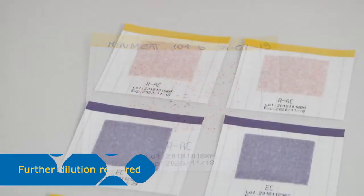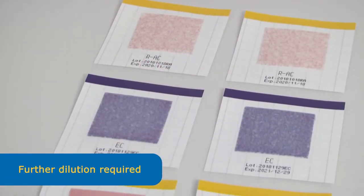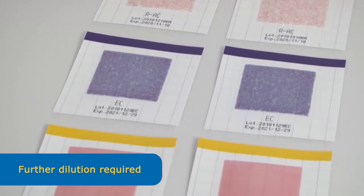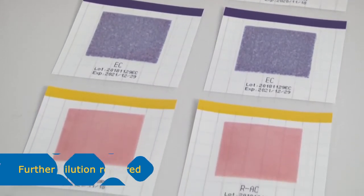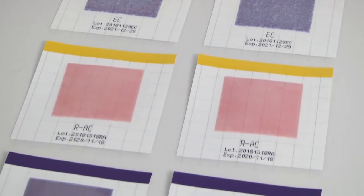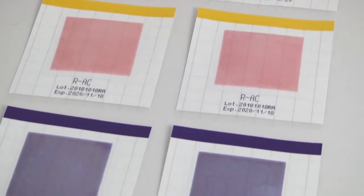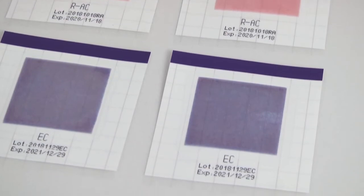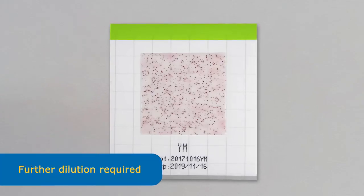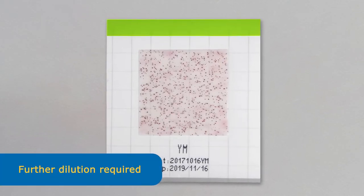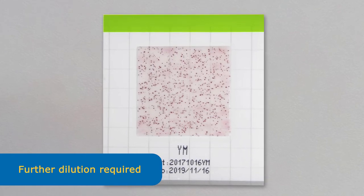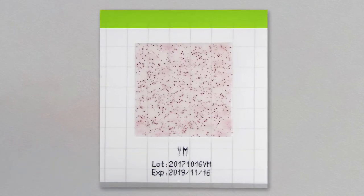If more than 400 CFU are grown, the entire pad may appear stained. In general, if more than 300 CFU are grown, the sample should be diluted further and retested. For yeast and mold, further dilution and retesting may be required at 200 CFU.